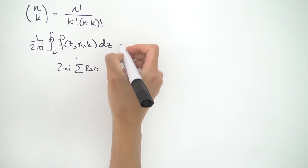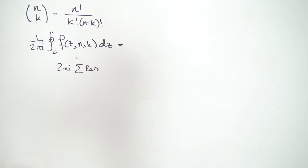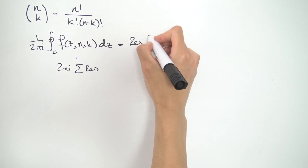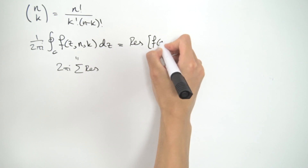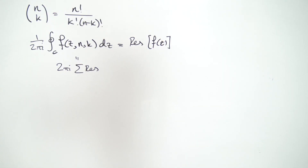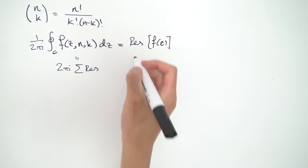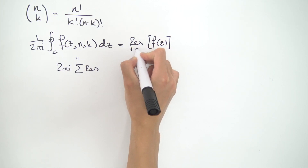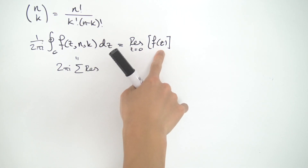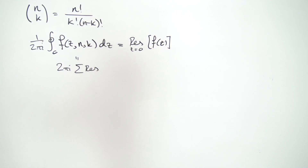So what this turns out to be so far is just the residue at some point of f(z). Now, what point could this be? It doesn't really matter — we could choose anything, and if we're not satisfied we could just do a translation in the complex plane. But to keep things simple, let's assume the residue is at zero, which means we want f(z) to have a pole at z equals zero, the origin.